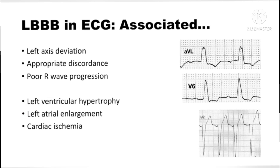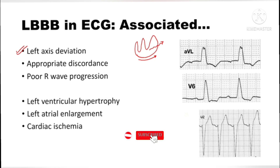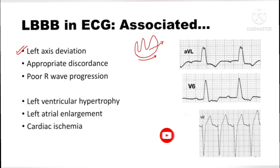There are associated ECG features present in addition to the core findings in a patient with left bundle branch block. The bulk of the current moves towards the left because depolarization of the left ventricle is delayed and aberrant, leading to left axis deviation. What is ventricular axis, how to calculate it, and what is right versus left axis deviation are covered in a separate video — the link is in the description below.